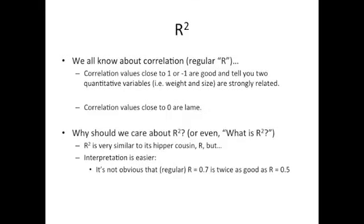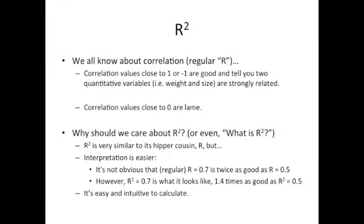For example, it's not obvious that when R equals 0.7, that's twice as good a correlation as when R equals 0.5. However, R squared equals 0.7 is 1.4 times as good as R squared equals 0.5. The other thing that I like about R squared is that it's easy and intuitive to calculate.